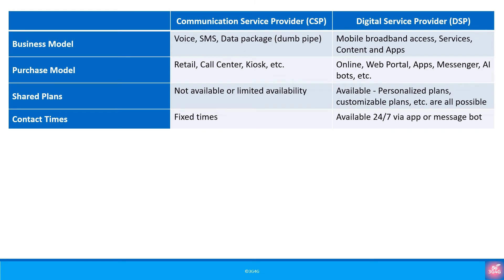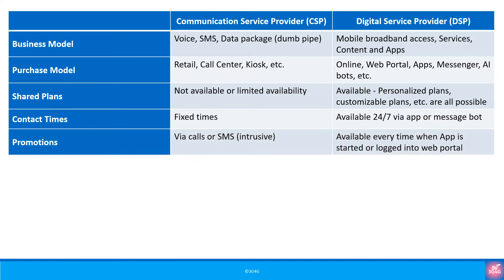With the CSP, if you have any queries, you can call the call centre that has fixed hours. With the DSP, it is all online — you contact the call centre only when it is absolutely necessary. With the CSP, promotions are via calls or SMS, which is very intrusive. With the DSP, promotions are available every time you log onto the web portal or when you start the app. Some over-enthusiastic DSPs may bombard their users with voice and SMS promotions as well, but this is not preferred.